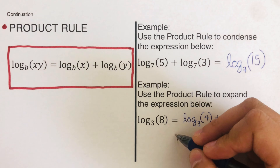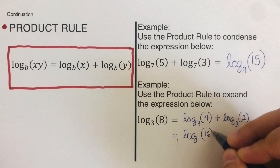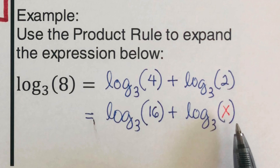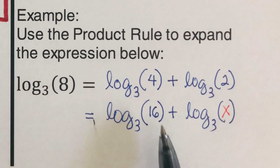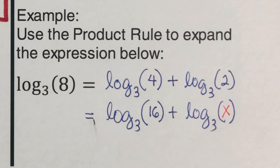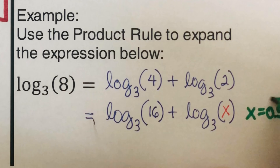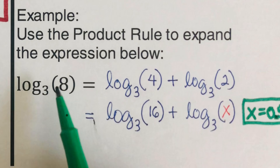There can be many combinations. Consider: log of 16 to the base three plus log of x to the base three equals log of eight to the base three. We need to find what number multiplied by 16 gives us eight. That number is 0.5, so x equals 0.5, since 16 times 0.5 equals eight.